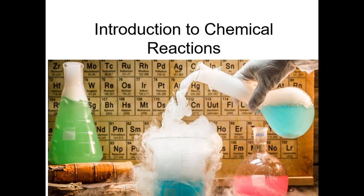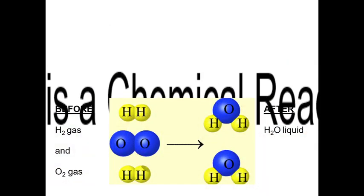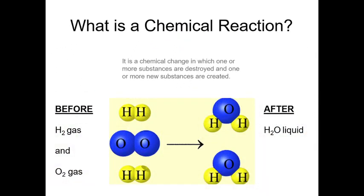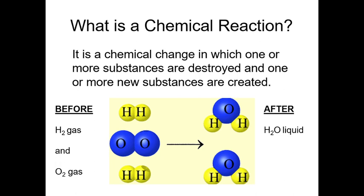Chemical reactions happen all around us. What are chemical reactions? It's a chemical change in which one or more substances are either destroyed and one or more new substances are created. We destroy the form of a chemical substance to change it into another form. The substances we start with aren't completely gone — we actually change them to another form.